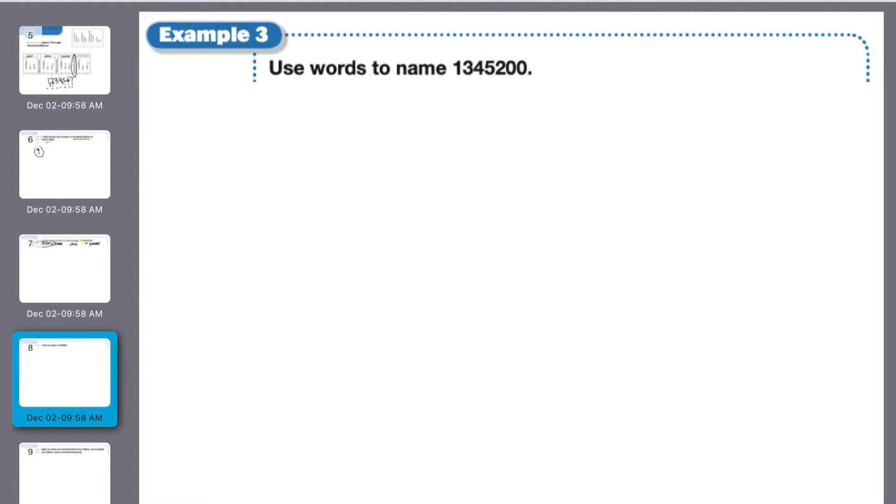Use words to name this number. So what helps is first adding your commas. So I'm going to start on the right. Every three spots I add a comma. And then when you write out the number in words, you put the commas in the same spots as well. So this would be one million, comma, because there's a comma right there.